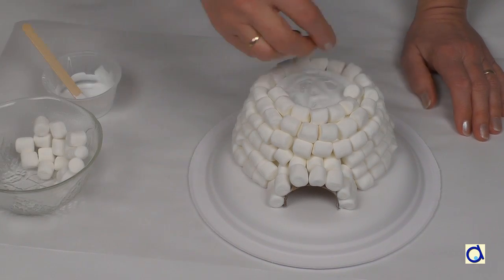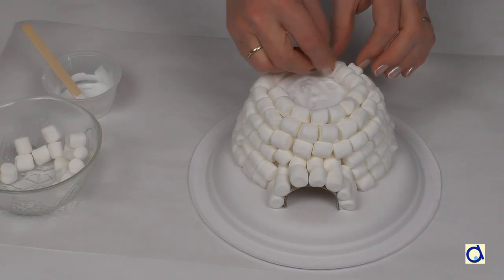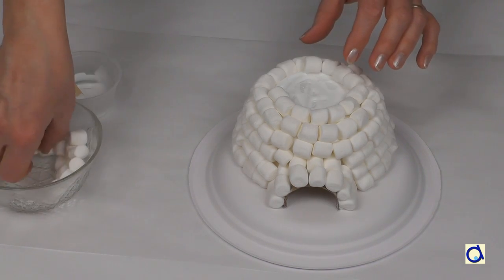If you do not have marshmallows, you can paint the ball and the tube with white paint and then draw lines with a black marker to represent the blocks of snow.